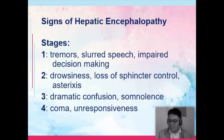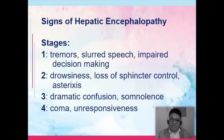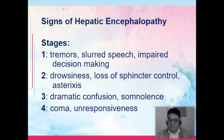The signs of hepatic encephalopathy have four stages. Stage 1: tremors, slurring of speech, impaired decision-making. Stage 2: drowsiness, loss of sphincter control — inability to control bowels or urination — and involuntary flapping or asterixis. Stage 3: dramatic confusion, somnolence — the patient falls asleep easily or is very difficult to arouse. Stage 4: coma — the patient is unresponsive, GCS 3 to 8. The progression of signs and symptoms manifests as neurologic problems.